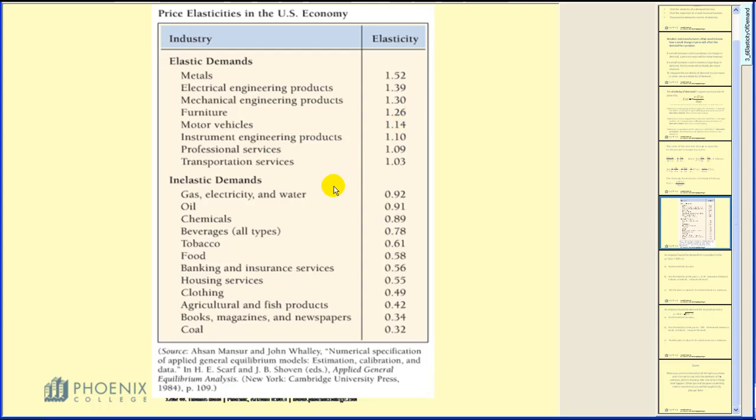When we have inelastic demand, for example, clothing and housing, those are items where if the price goes up, we're still going to have to purchase them. We have to have clothes, we have to have a place to live. That's why if the price increases, you can expect an increase in revenue. Remember that revenue is maximized when the elasticity is equal to one, so you can see the items here that are very close to the value of one.